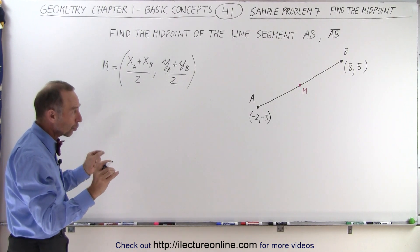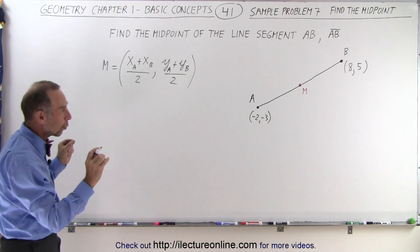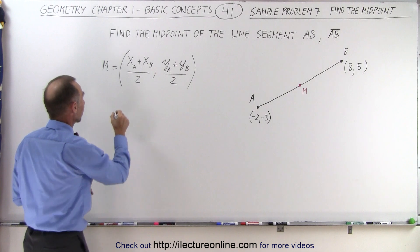So we add the two endpoints together, or the two x coordinates of the endpoints, divide by 2, and we add the two y coordinates of the endpoints and divide by 2 to get the midpoint. So let's plug in the values.